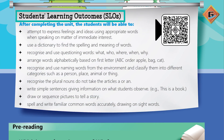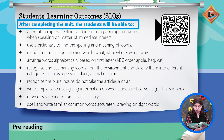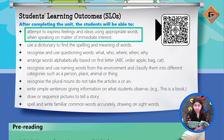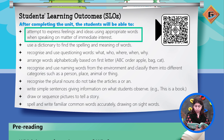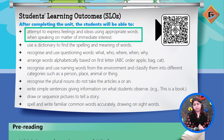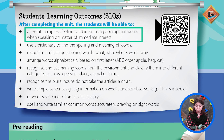The student learning outcomes: after completing the unit, the students will be able to attempt to express feelings and ideas using appropriate words when speaking on matters of immediate interest. یعنی کہ بات کرتے ہوئے اپنے ideas یعنی کہ خیالات اور feelings یعنی کہ جو وہ محسوس کر رہے ہوتے ہیں، احساسات کا اظہار کر سکیں۔